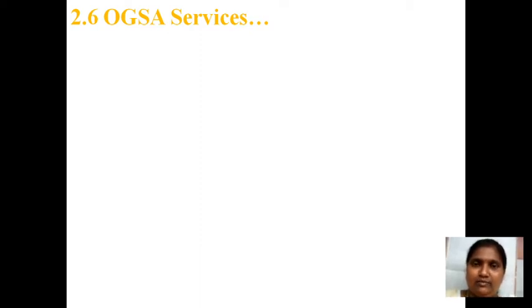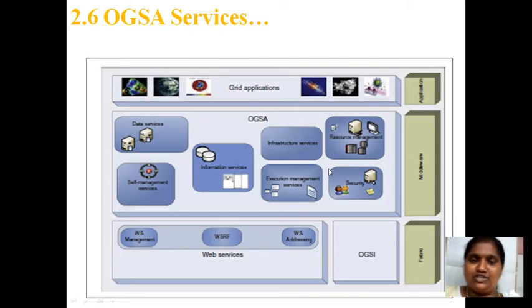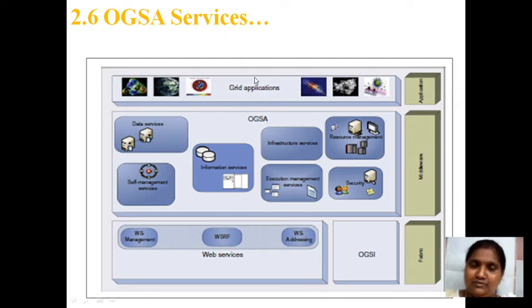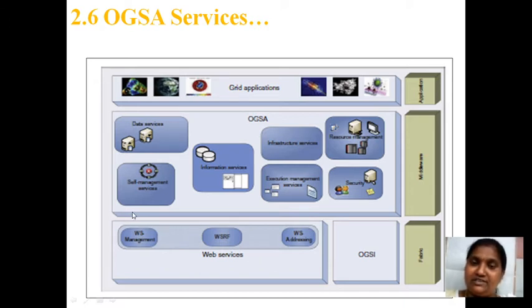In the previous videos we learnt about what is OJSA and what are the services it is going to provide to us, so that the customer is going to be satisfied at any point of time from the grid and cloud services. We also learnt about different services of web services in terms of web service form language, web services description language, their standards, and their security concepts.